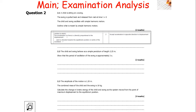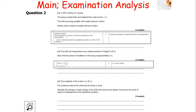The child and swing behave as a simple pendulum of length 2.25 metres, and we need to show that the period of oscillation is approximately 3 seconds. We use T = 2π√(L/G). We pop our values in, remembering that G is 9.81 on Earth. Our answer is T = 3.01 seconds.